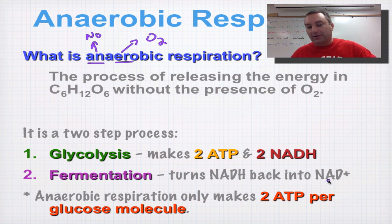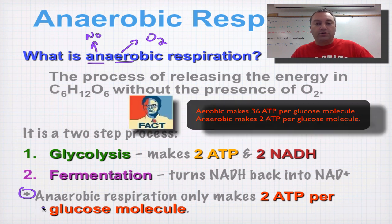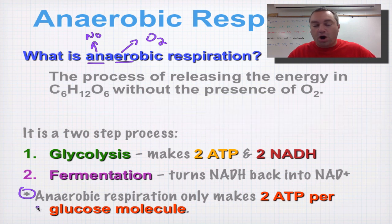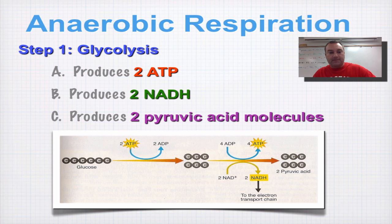So we can go back to glycolysis. Make sure you mark this down in your notes — it's very important: you're only going to produce 2 ATP per glucose molecule. So hardly efficient at all, but for some organisms this can be just enough to keep that organism alive.